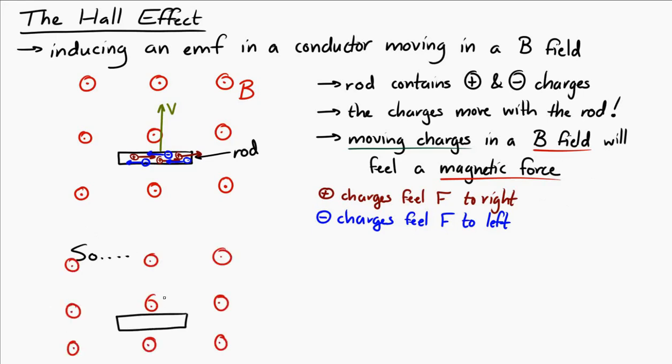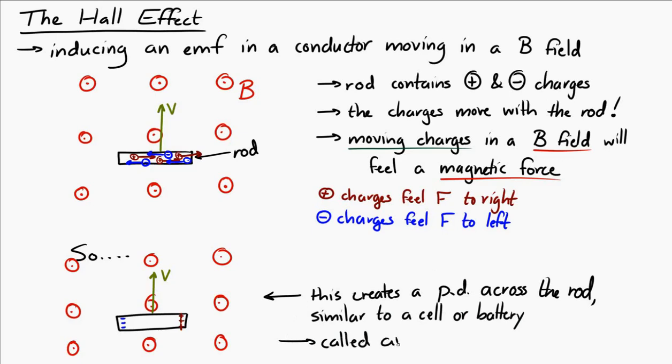So what ultimately happens is a negative charge will develop on one side of this rod as it moves through the magnetic field, and a positive charge will develop on the other side. So this sets up a potential difference across the rod, similar to the potential difference from a cell or a battery. This is called an induced EMF.